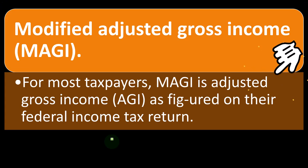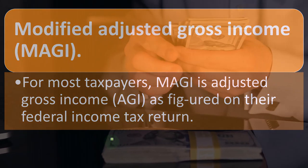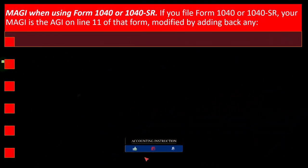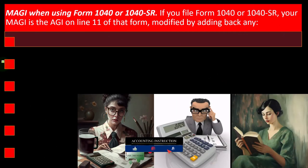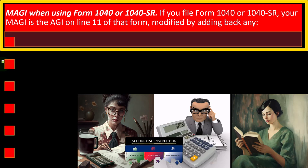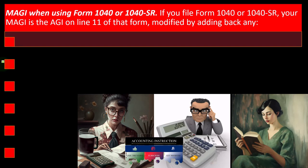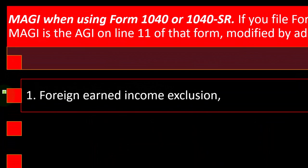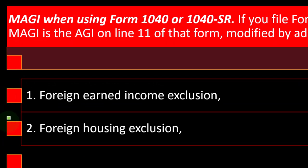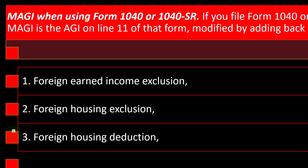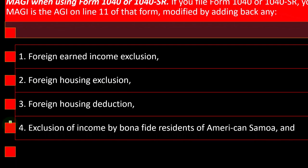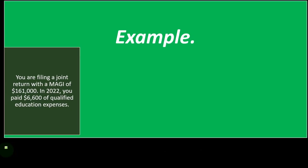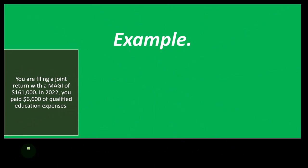For most taxpayers, the MAGI — modified adjusted gross income — is the same as the AGI on their federal income tax return. On Form 1040 or 1040-SR, your MAGI is the AGI on line 11, modified by adding back, if applicable: (1) foreign earned income exclusion, (2) foreign housing exclusion, (3) foreign housing deduction, (4) exclusion of income by bona fide residents of American Samoa, and (5) exclusion of income by bona fide residents of Puerto Rico.